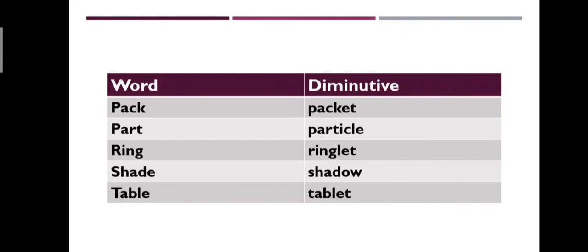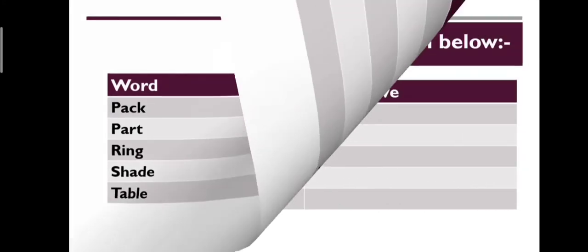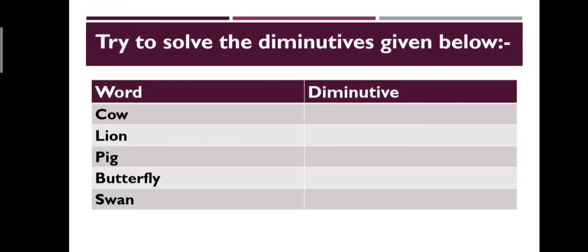Shade – shadow, table – tablet. Now let's try to solve the diminutives given below. I'll give you a minute to solve it. Now let's see the answers.